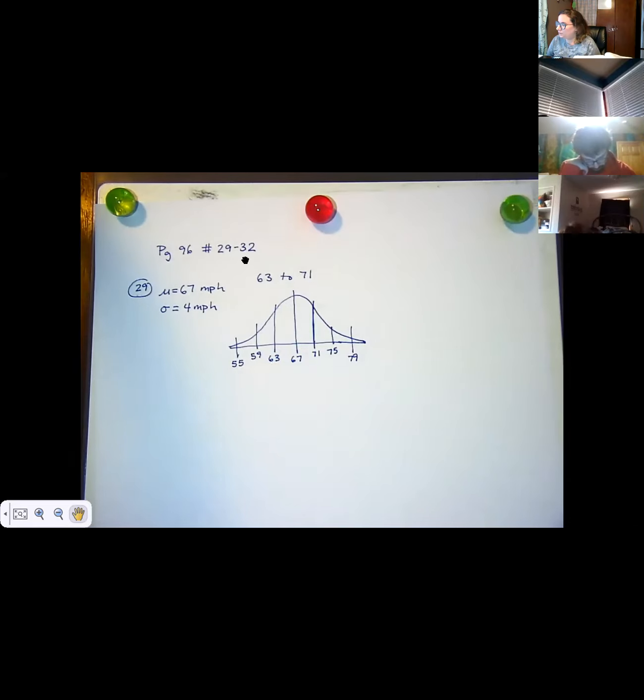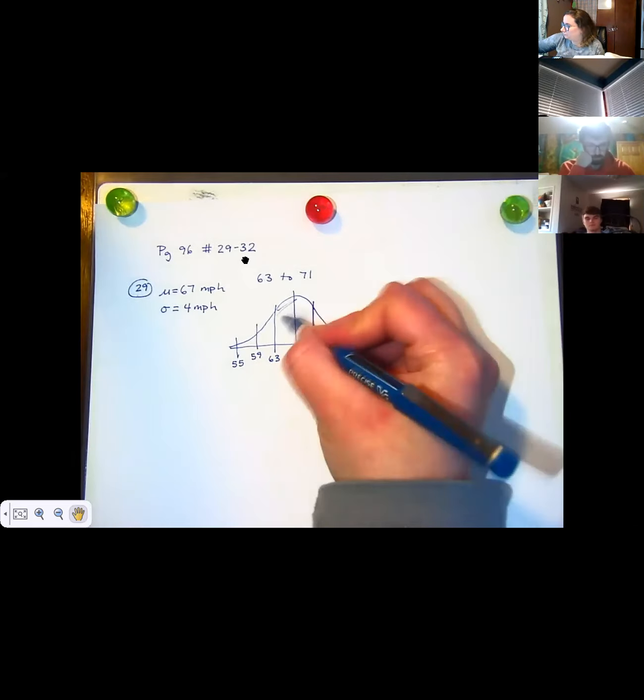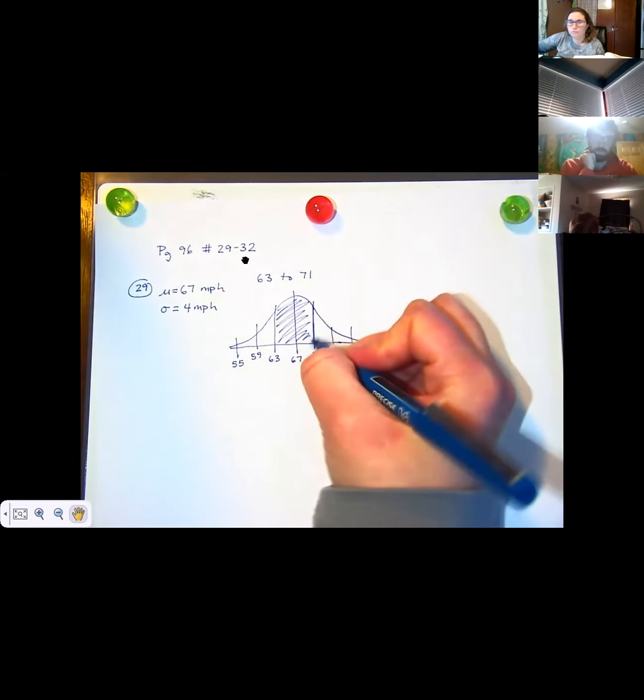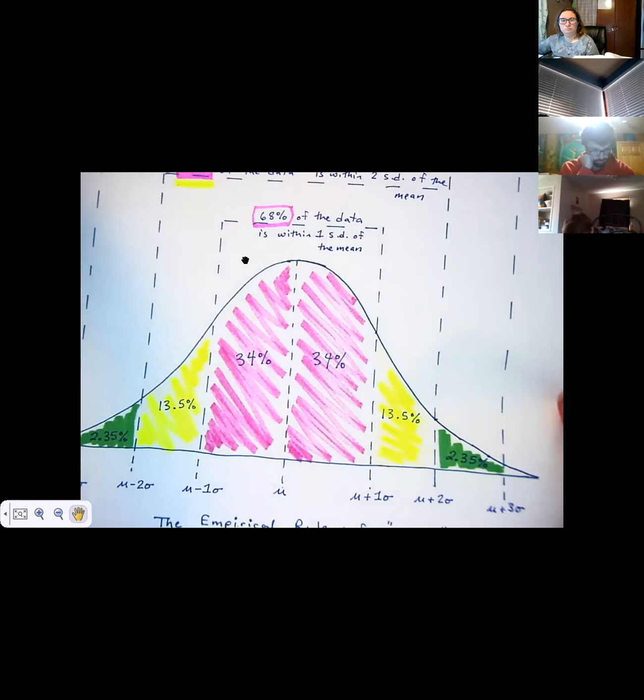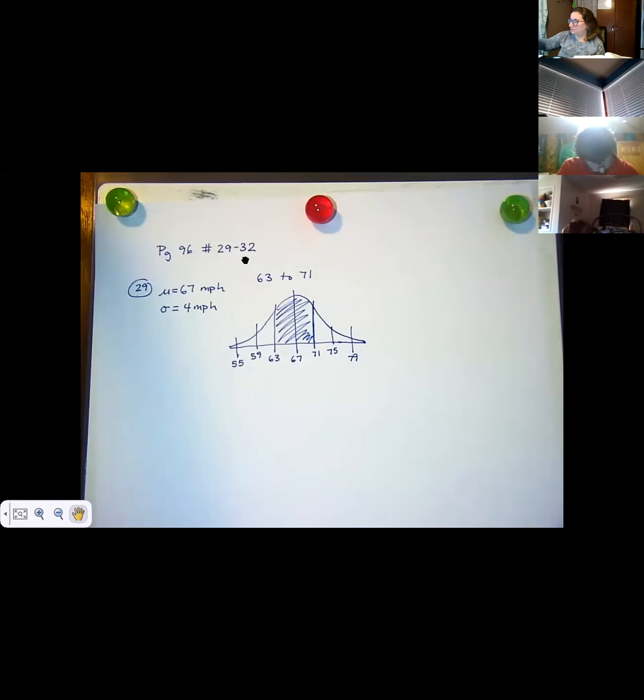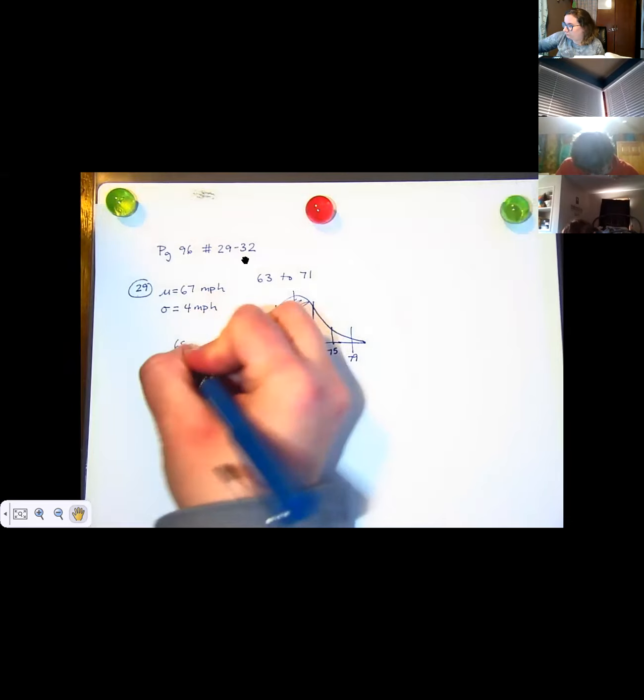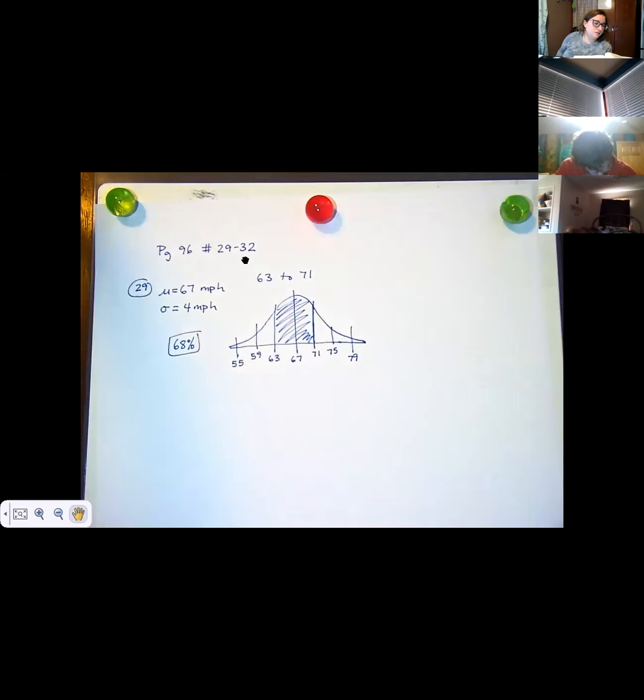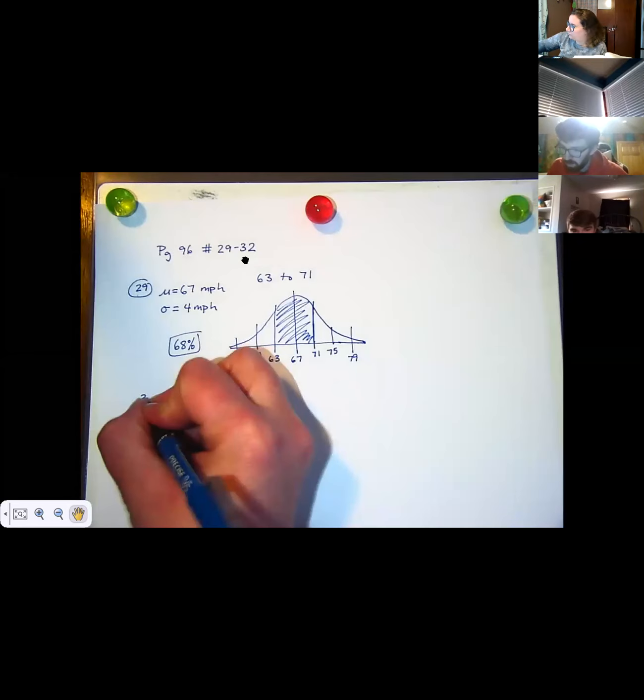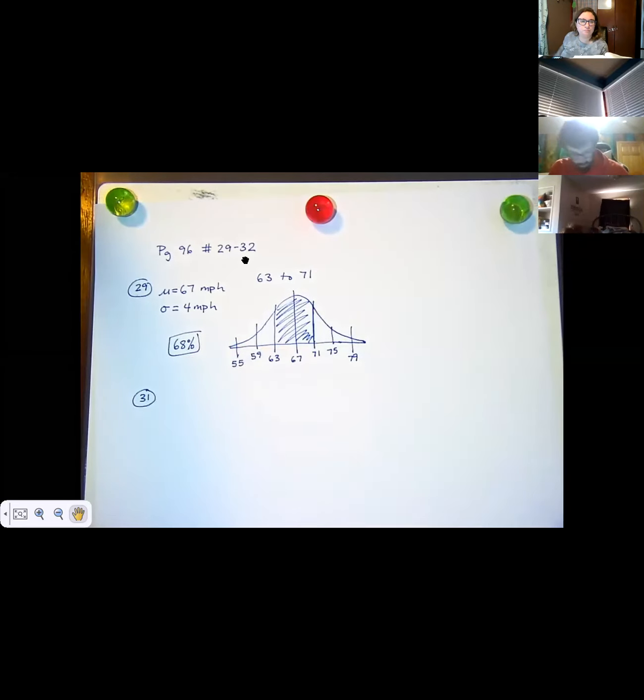And then it said, what percent of vehicles are between 63 and 71? Okay, so now look at your piece of paper. What percent of vehicles are in there? 68. Yes, 68%. That's the right answer. This isn't a very hard question to ask. But it is hard in the sense that it's just a little confusing about what they're talking about.